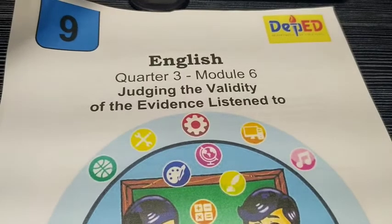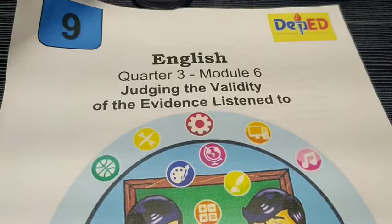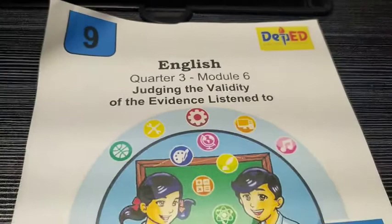Today we will have our Module Number 6 for our 3rd quarter. We have the same competency: judging the validity of the evidence listened to. We will start on page number 1.